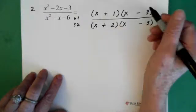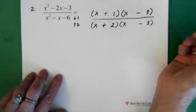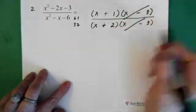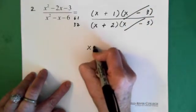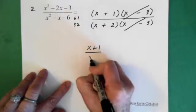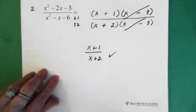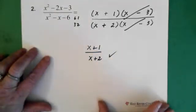So now we say, the (x - 3) divided by (x - 3) cancel. So these two are gone. And our answer becomes (x + 1)/(x + 2). And that is the answer to the question.